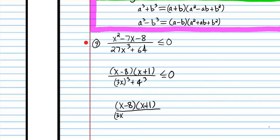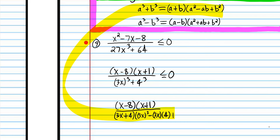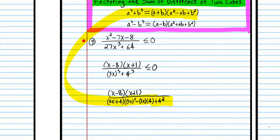Using a equals 3x and b equals 4, we apply the sum of cubes formula: 3x plus 4, times 9x squared minus 12x plus 16. We need a closing parenthesis at the end. So we factored the sum of two cubes and simplified to 3x plus 4 times 9x squared minus 12x plus 16 is less than or equal to zero.